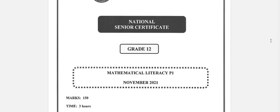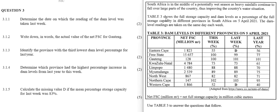Welcome to question 3 of the November 2021 paper, paper 1. As with the other two questions, table 3 gives information on the right and the questions are to your left. We've got four columns: the net full storage capacity, the percentage for this week, the percentage for last week, and the percentage for last week last year. We'll use all of this information to answer the questions, and all of these readings were taken on 5 April 2021.